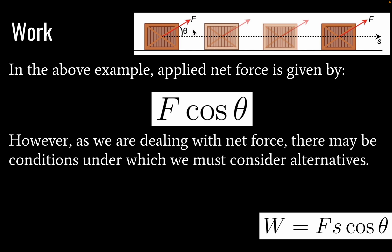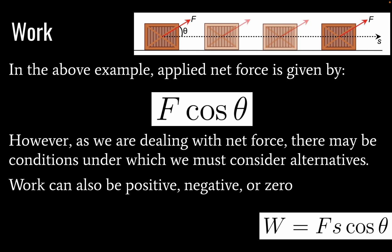Just be aware that if we measure the angle differently — for example, from the vertical — we'd instead be looking at a sine function. So you need to be careful with your cosine and sine functions. Our work can be positive, negative, or zero. We don't usually think of negative energy as a thing, but it can be useful in the context of work because our force is directional — it could be positive along the positive x-axis or negative along the negative x-axis. That's why thinking of work in negative terms can be useful.